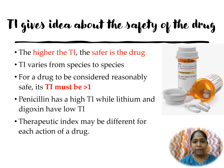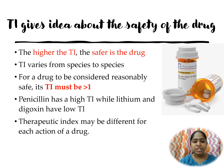Knowing the safety of a drug with the therapeutic index: when the therapeutic index is higher, the safer the drug. Therapeutic index varies from species to species. For a drug to be considered safe, its therapeutic index must be greater than 1.